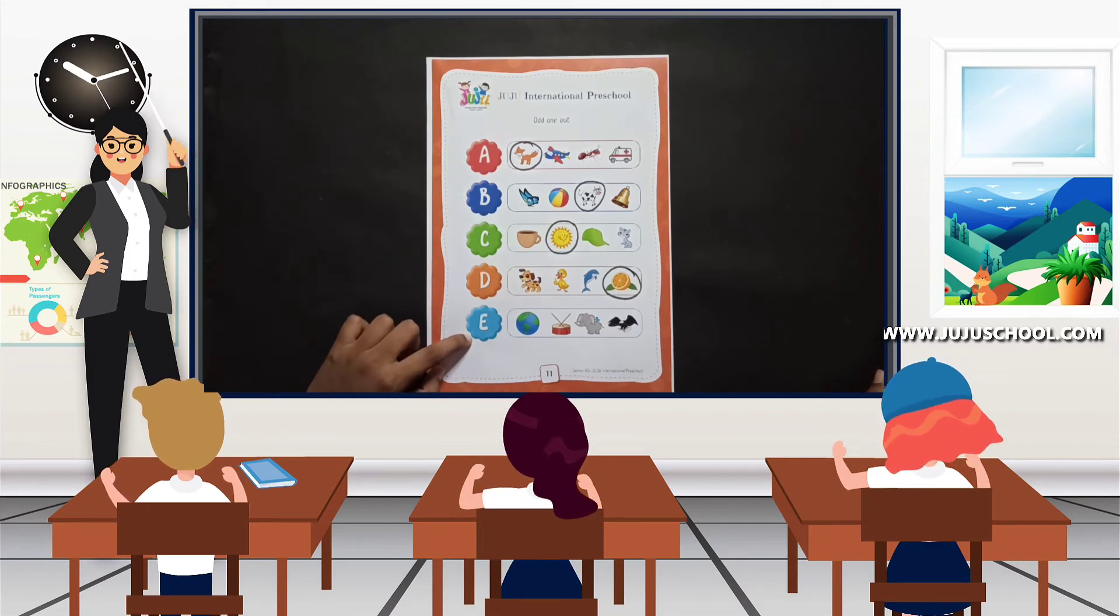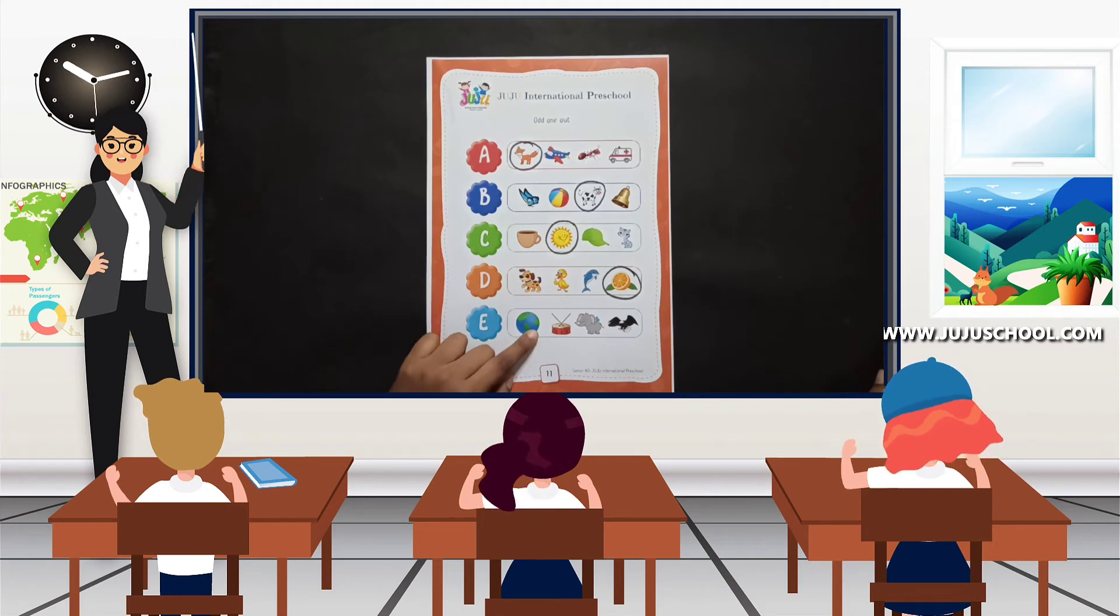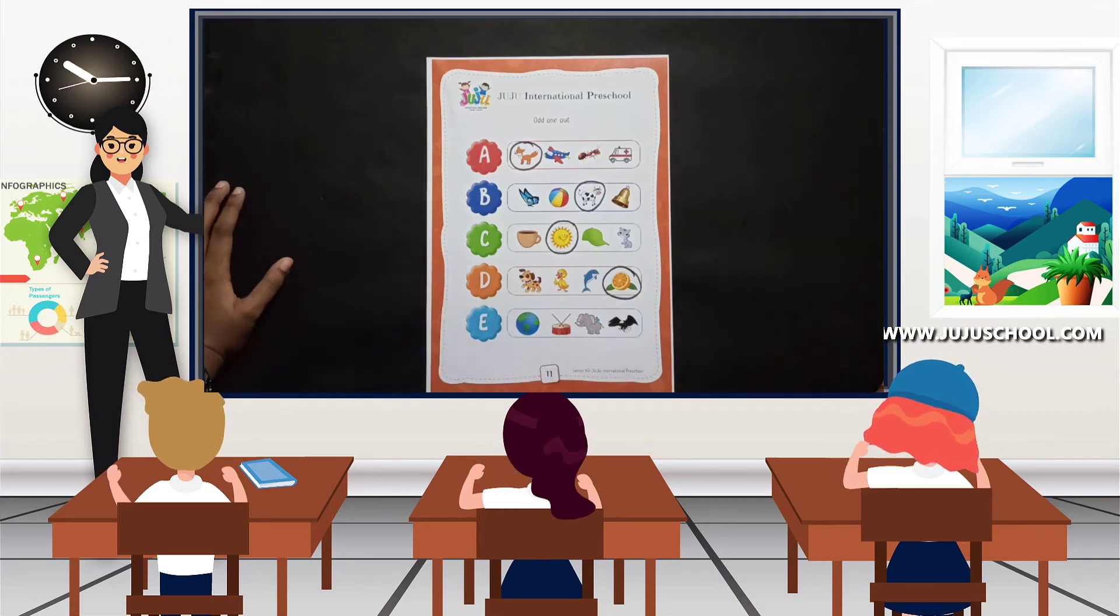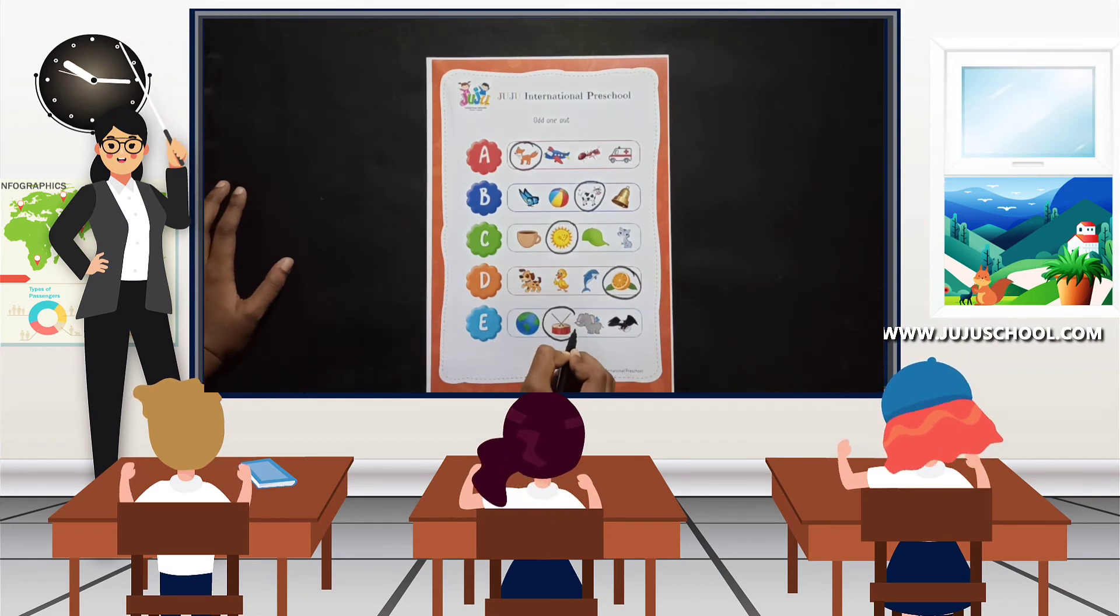Finally, we move on to the last alphabet, that is letter E. E for egg, E for earth, E for drum? No. That's right, E for elephant, E for eagle. So the odd one out is the drum. So I am going to circle it and the odd one is out.